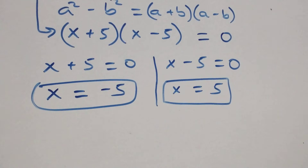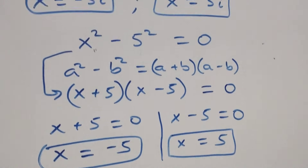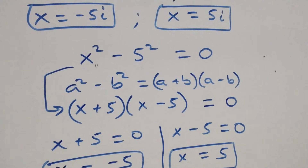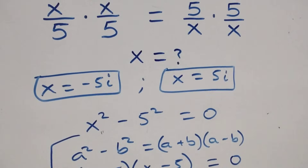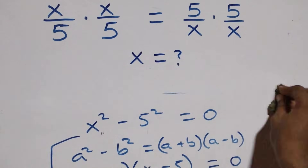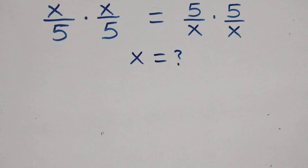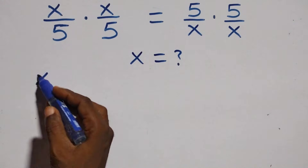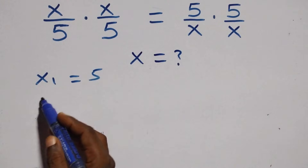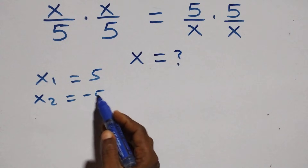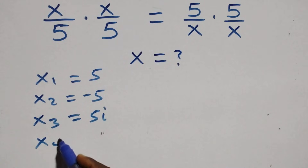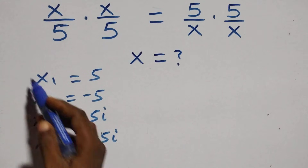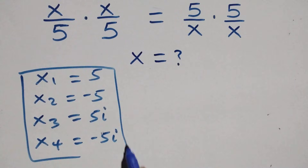Together we have four solutions — two real and two complex. Writing them out: x₁ equals 5, x₂ equals minus 5, x₃ equals 5i, and x₄ equals minus 5i, making four solutions in total for this problem.